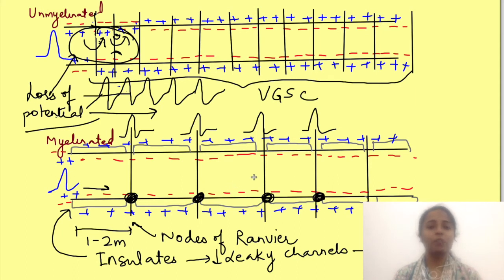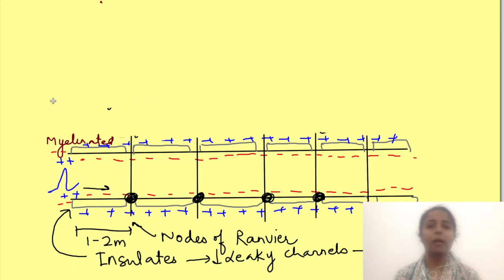Myelination does one more thing also. Apart from making sure that there is lesser potential loss it also increases the speed of conduction. See for potential change to occur the charge should deposit on the membrane. This is similar as a capacitor. When the charge charges the capacitor the potential change occurs. So it takes some time to charge the capacitor.